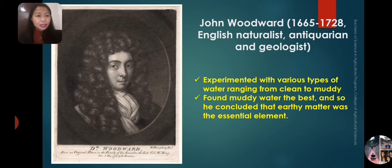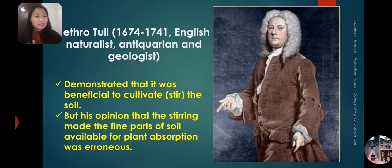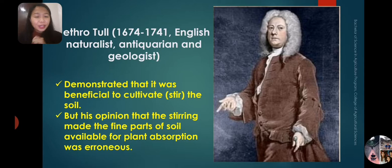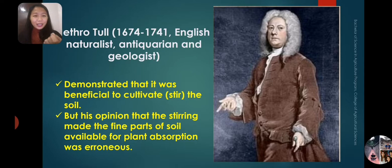Jethro Tull existed from 1674 to 1741. He was an English agriculturist and naturalist. He demonstrated that it was beneficial to cultivate or stir the soil. However, his opinion that stirring made the fine parts of the soil available for plant absorption was erroneous — he believed that plants absorb the fine particles of the soil directly.